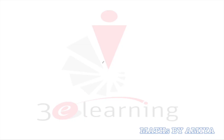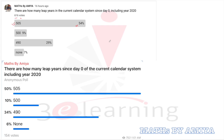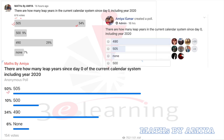Now let's check what we got on different platforms. On the YouTube community tab, 616 votes were cast and more than 50% say 505. On our Telegram channel, approximately 50% of people are also saying 505. On the Facebook group, around 38 people are saying 490. So we are getting 505 in two places and 490 in one place. The answer to this question is nothing but 490.